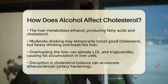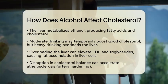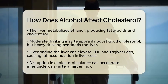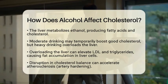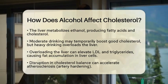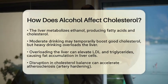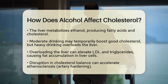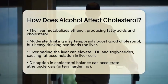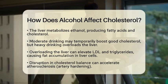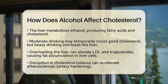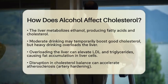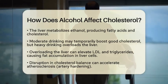So, what happens in your body when you consume alcohol? When you drink, your liver metabolizes ethanol, which can stimulate the production of fatty acids and cholesterol. While moderate drinking may temporarily boost your good cholesterol, heavy drinking can overload your liver. This overload can elevate low-density lipoprotein and triglycerides while promoting fat accumulation in liver cells. Over time, this can disrupt the balance of cholesterol in your body and speed up the process of atherosclerosis, which is the hardening of arteries.